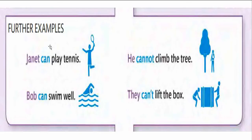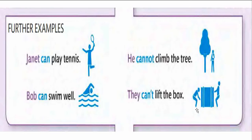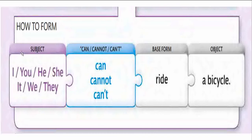Here are some examples: 'Janet can play tennis' — that is Janet's ability. 'Bob can swim well' — that is Bob's ability. In negative form: 'He cannot climb the tree' (note the silent 'b' in 'climb'). 'They cannot lift the box' or 'They can't lift the box.' For writing, use 'cannot'; for spoken English, use 'can't.' Students are requested to pause and construct one sentence for each category.